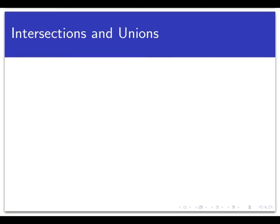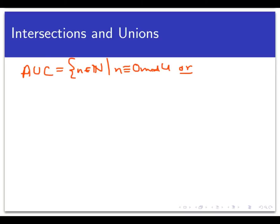Let's talk about intersections and unions first. Let's compute the set A union C. This would be the set of all natural numbers that belong to either A or C — remember, union means OR, it's a disjunction. That would be the set of all natural numbers N such that N is congruent to 0 mod 4, or N is congruent to 0 mod 3. So we're looking for positive integers that are either congruent to 0 mod 4 or congruent to 0 mod 3.